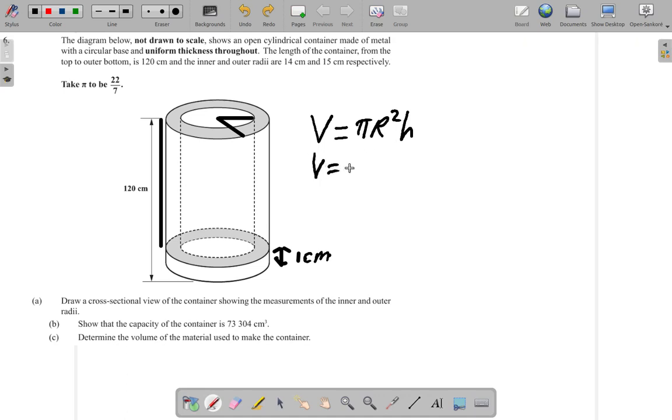So in this case we have 22 over 7 times the radius of the inside is 14, so 14 squared, times the height would be 120 minus 1. The 120 extends all the way from the top to the bottom, but the base is 1 centimeter thick, so you would have 119.